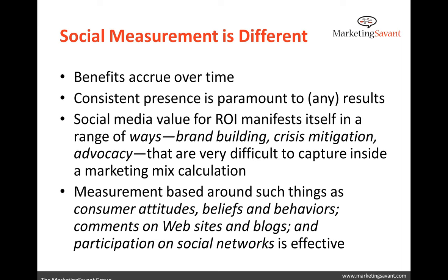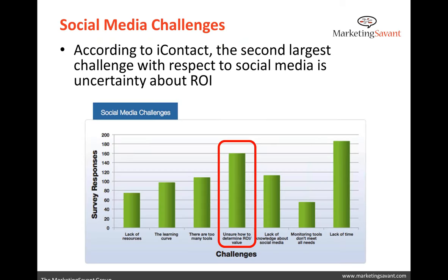How do we put a value on that for our organization? It doesn't always come in a straight funnel format, although we'll try our best to make that work. A couple of quick challenges organizations are seeing with social — the biggest challenge is time, and that goes back to the consistency element. Eye Contact, an email marketing provider, did a study looking at what VPs of marketing are really struggling with.